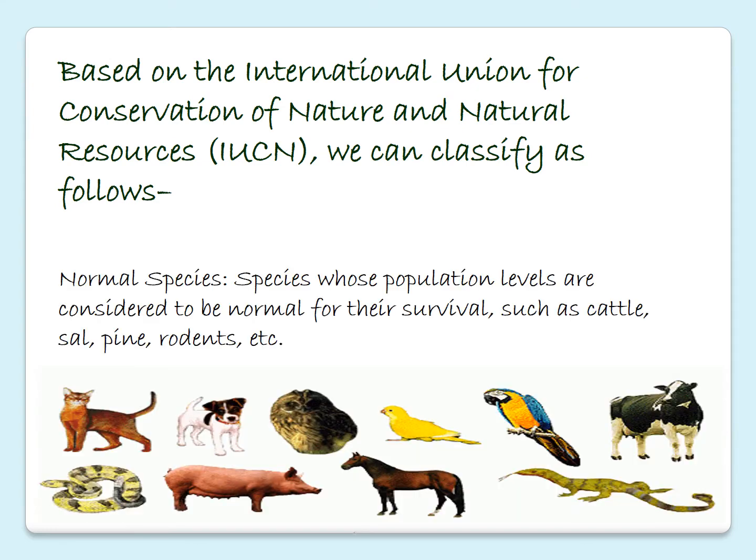Normal species: species whose population levels are considered to be normal for their survival, such as cattle, sal, pine, rodents, etc. All the normal animals we see around us are included in normal species.